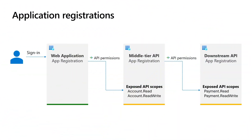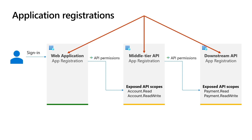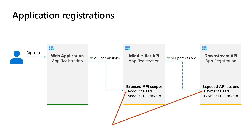Next, I'm going to show you how to configure Microsoft Entra ID. Before we start, there are a couple of terms you should be familiar with. First is app registration — to enable your application to sign in with Microsoft Entra ID and acquire an access token, you need to register your application. You should also register the APIs. App registrations establish a trust relationship between the applications, APIs, and Microsoft Entra ID.